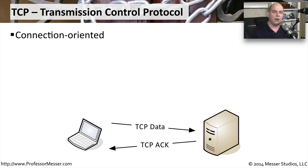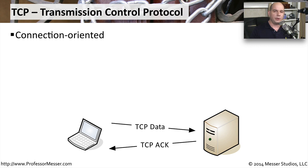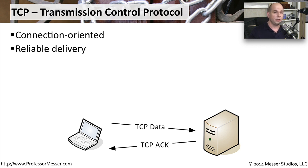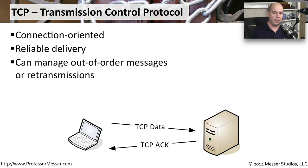TCP also requires acknowledgments. When you send data, you're expecting to get an acknowledgment back from the other side. This means that the delivery of information is very reliable — we know if the other side received the message. And if we don't get that acknowledgment back, we can simply send that data again. This gives end stations a lot of control when sending and receiving information.